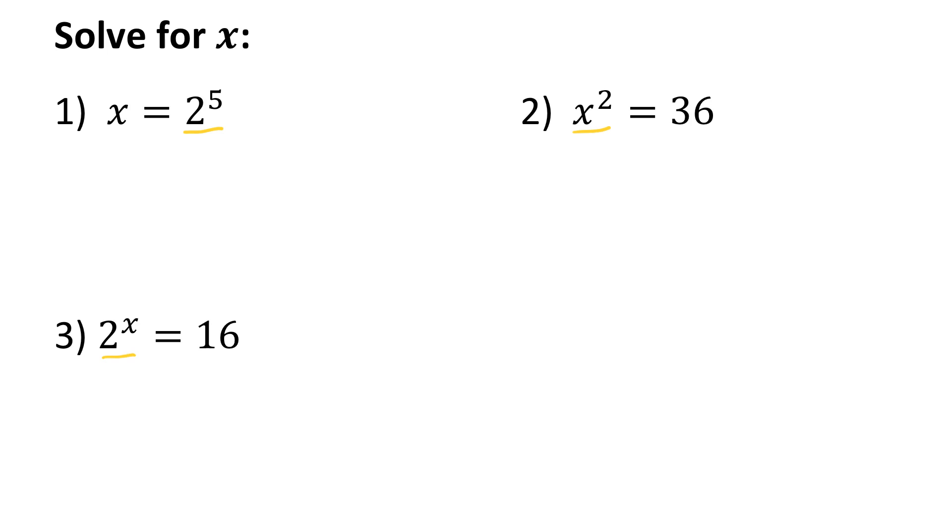So in the first equation it's fairly straightforward. I just want to know what is the value of 2 to the power of 5. So 2 to the power of 1 is 2, 2 squared is 4, 2 to the power of 3 is 8, 2 to the power of 4 is 16, and 2 to the power of 5 is 32. Therefore x equals 32.